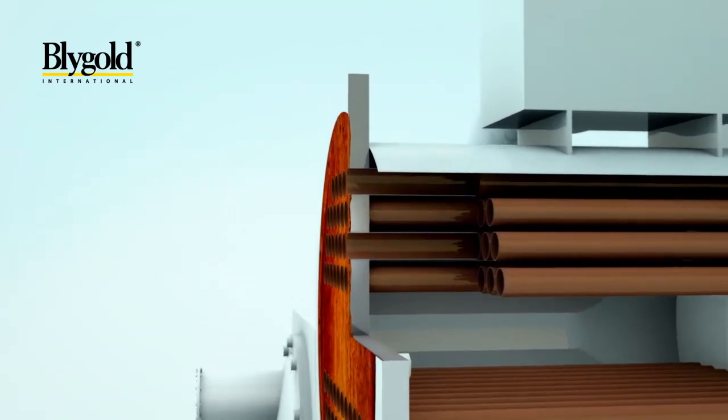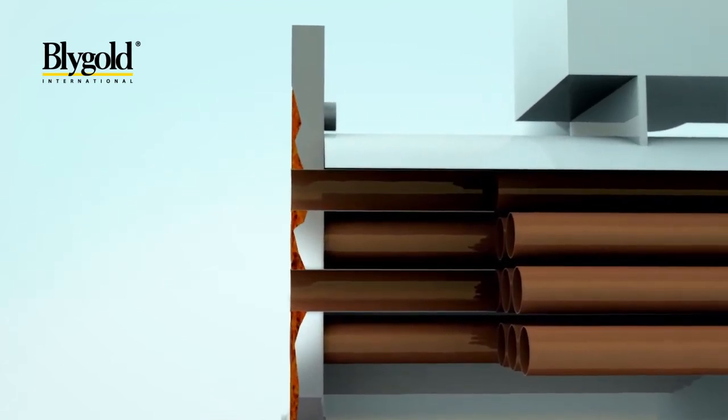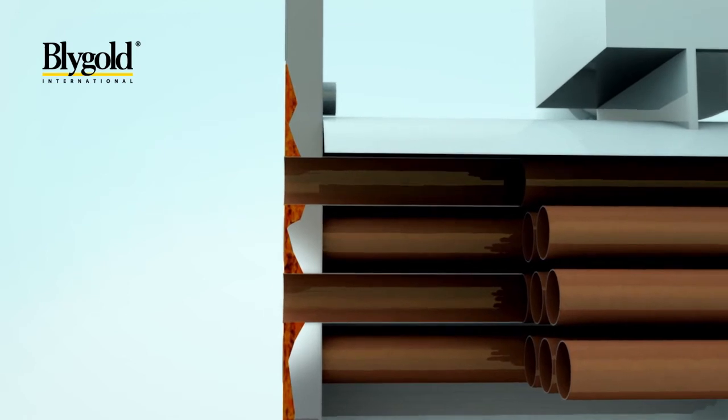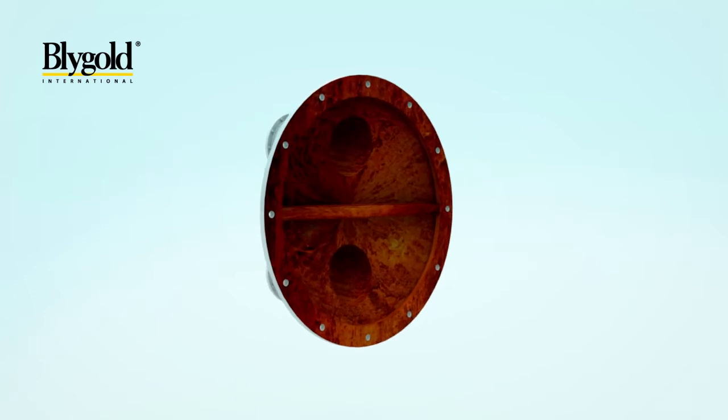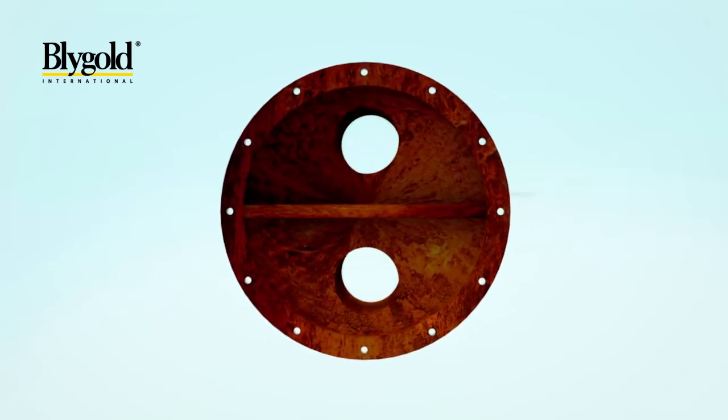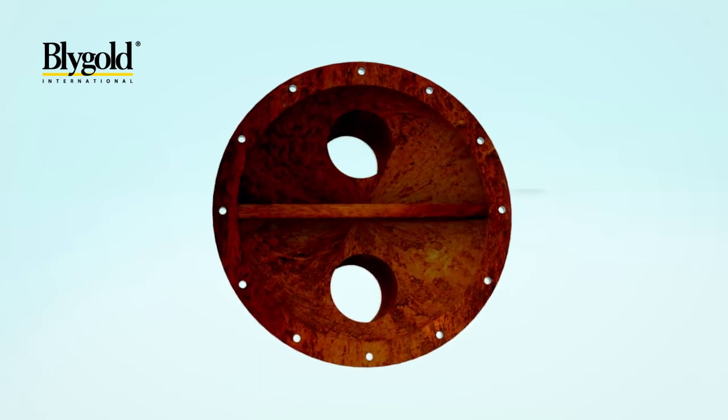Due to this galvanic action, the tube sheet loses thickness rapidly and, as a result of that, the capability to resist the high-pressure gas in the shell of the heat exchanger. Next to the galvanic corrosion around the tubes, the overall surface of the tube sheet, water box and covers is affected significantly.